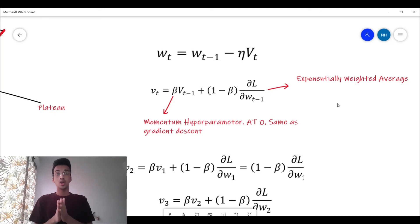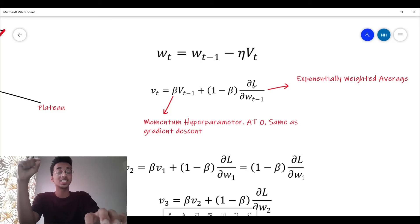So the model has knowledge of how the slope has been decreasing. Based on that it is going to take steps. This beta that you're seeing is also called the momentum hyperparameter, and you can see what role it has. If beta becomes 0, this equation will simply become v_t equals change of loss with respect to the previous weight, and this will simply become gradient descent.